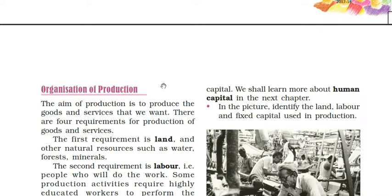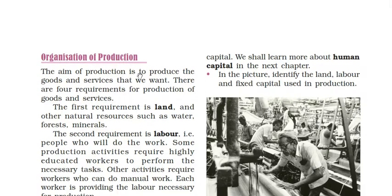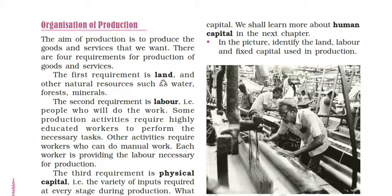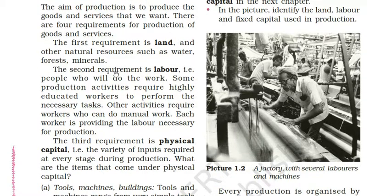The aim of production is to produce the goods and services that we want. There are four requirements for production. The first requirement is land and other natural resources such as water, forests, minerals, etc. The second requirement is labor, that is people who will do the work. Some production activities require highly educated workers, while others require workers who can do manual work.